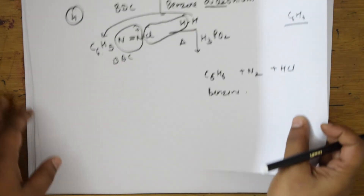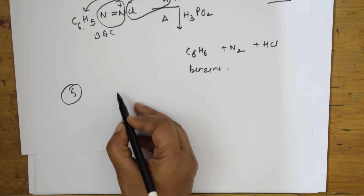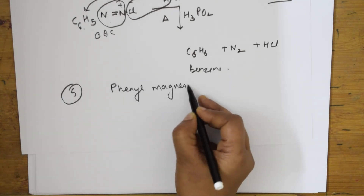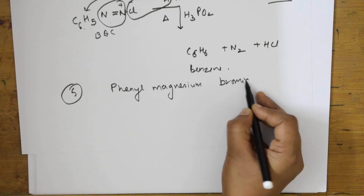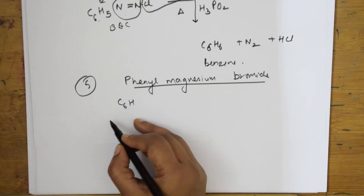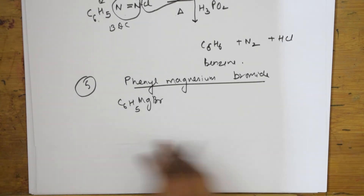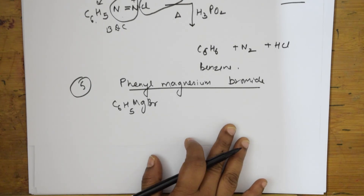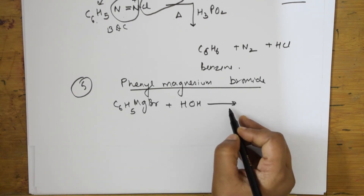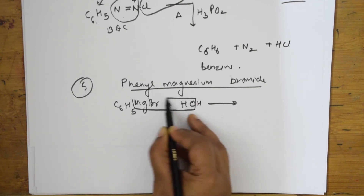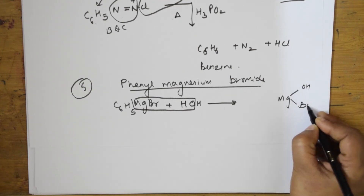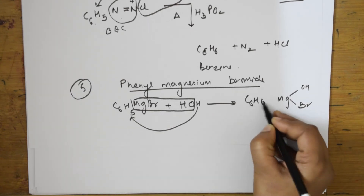I can also prepare benzene from phenyl magnesium bromide — the Grignard reagent. The formula is C6H5-MgBr. What I do is treat this with water. Immediately, the magnesium bromide breaks and comes out as Mg(OH)Br, and the leftover C6H5 group picks up a hydrogen, forming benzene.